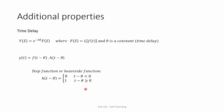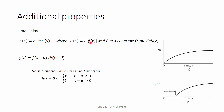To help you understand this better, let's plot the two functions f(t) and y(t). If f(t) is some function, then y(t) will be 0 as long as t is smaller than θ. As long as t is larger than or equal to θ, it will be 1 times f(t − θ), which is basically a translation of f(t) by θ in time. That's why we call this time delay — y(t) is just a translated version of f(t) in time by θ.